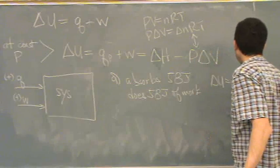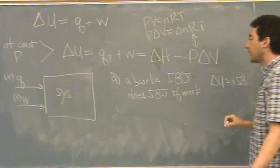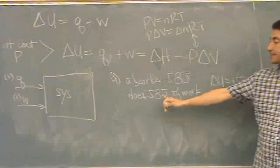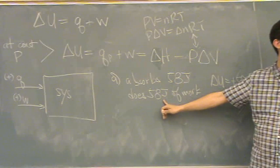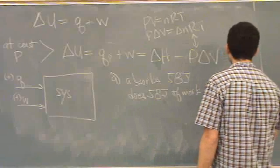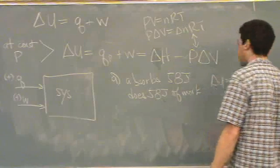Okay. Plus work. Work is this number. But you want to know if it's a positive or negative number. Negative. Because it does work. 58. Zero. There. Part A is done.